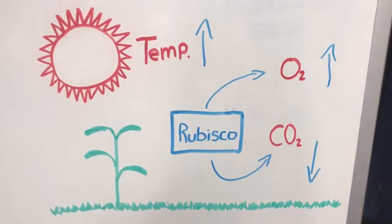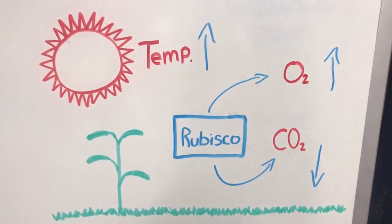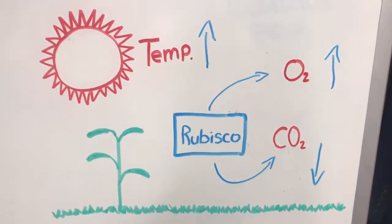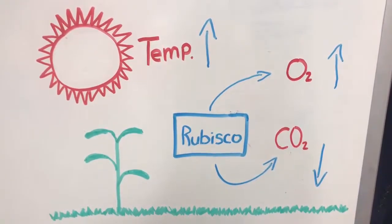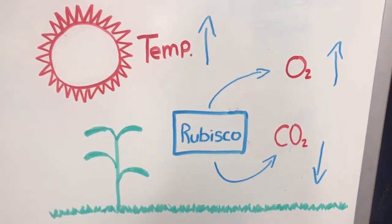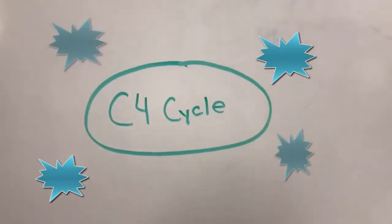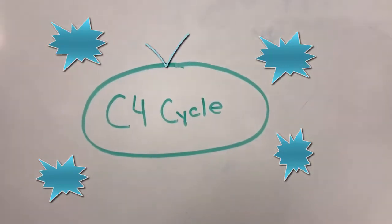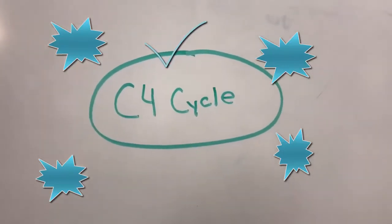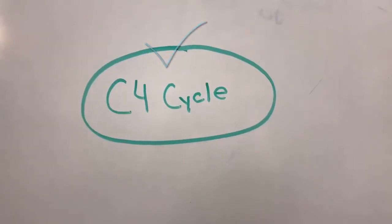Some plants have an additional photosynthetic pathway that uses the released carbon dioxide from photorespiration and conserves it. These plants are called C4 plants because they use carbon dioxide in a pathway called the C4 cycle. Instead of using a 3-carbon chain as its intermediate, it uses a 4-carbon chain. C4 plants are found in the tropics under high temperatures.